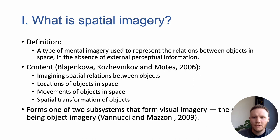First I'll start by defining what spatial imagery is. It's a type of mental imagery we use to mentally represent the relations between objects in space, in the absence of external perceptual information. The content of such imagery typically includes imagining spatial relations amongst objects and the movement of objects in space.